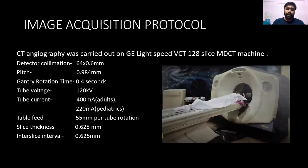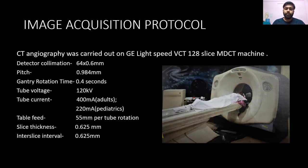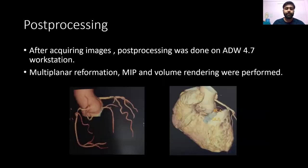The study was carried out on a GE Lightspeed VCT 128-slice multi-detector CT machine with electrocollimation of 64 x 0.6 mm, tube voltage 120 kV, tube current of 400 mA for adults and 220 mA for pediatric patients, and a slice thickness and slice interval of 0.625 mm.